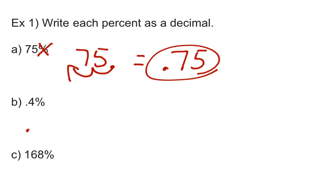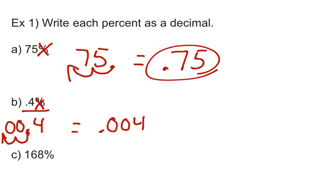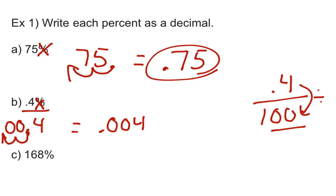For part B, I have 0.4%. I'm going to drop the percent sign, but to do that I need to move the decimal two places to the left — even though this is already a decimal. Moving left twice means I add a zero, then add another zero, giving me 0.004. The reason we always move two places is because percent means a number out of 100, so we're dividing by 100 — those two zeros move the decimal point two places. For part C, 168%: the decimal point is to the right of 8, so moving two places left gives me 1.68.